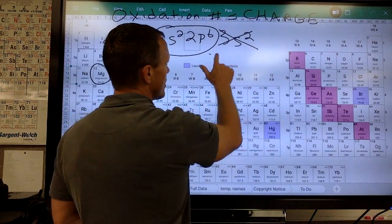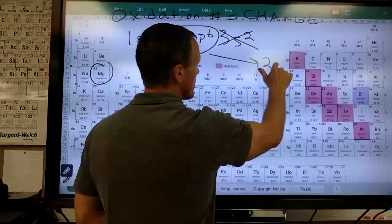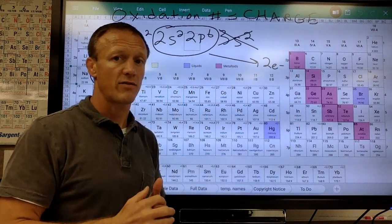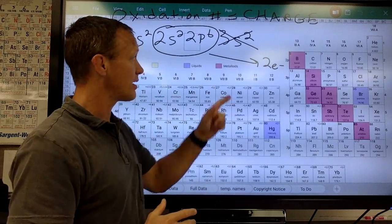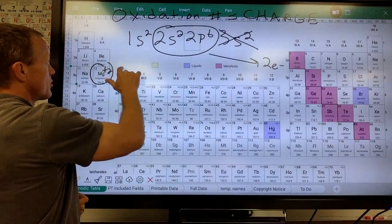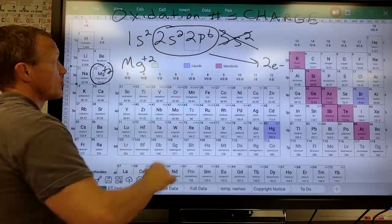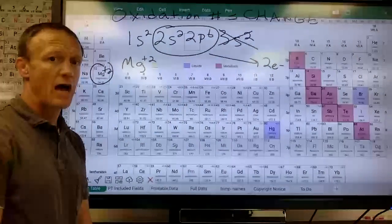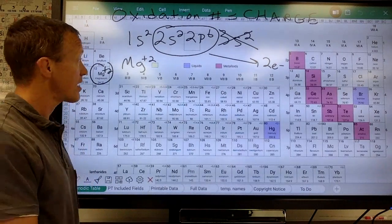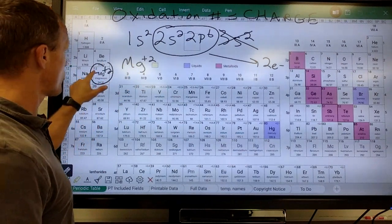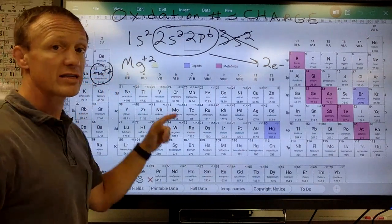So we think about that. If it gives away two electrons, if you get rid of negatives, you become more positive. It's getting rid of two negatives. It forms a positive two charge. So magnesium, you write it like this. Magnesium, plus two charge. That's called a cation, by the way. Cation ions are positive. Cats have paws. Cation ions are positive. So it's called a cation. And the reason it's positive is that it still has its 12 protons, and now only has 10 electrons.